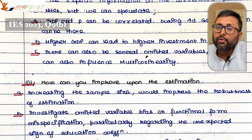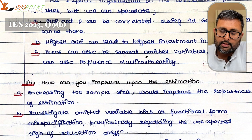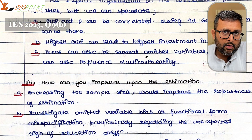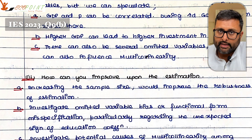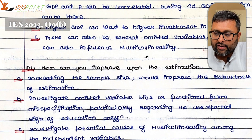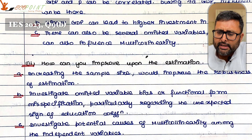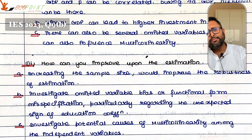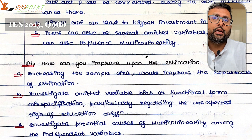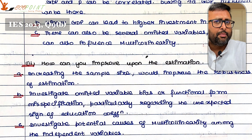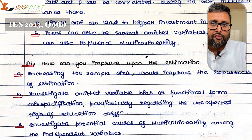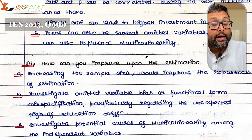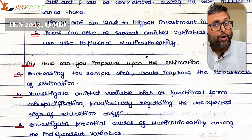The question arises: how can you improve upon this estimation? First and foremost, you have to increase the sample size. The moment you increase the sample size, it is going to improve the robustness of the estimation. Also, investigate omitted variable bias or functional form misspecification, particularly regarding the unexpected sign of the education coefficient — you have to see whether you are omitting some important variable.